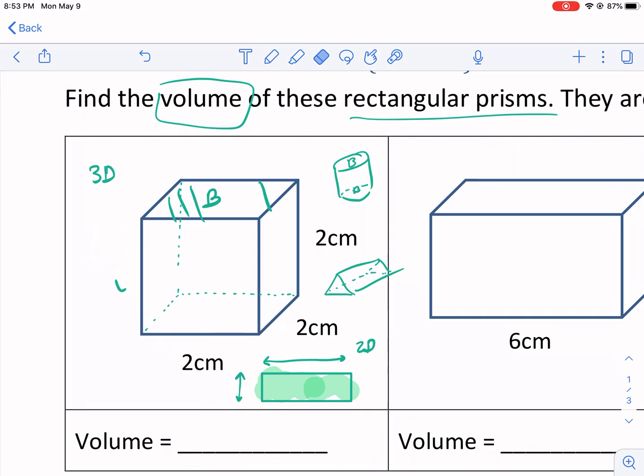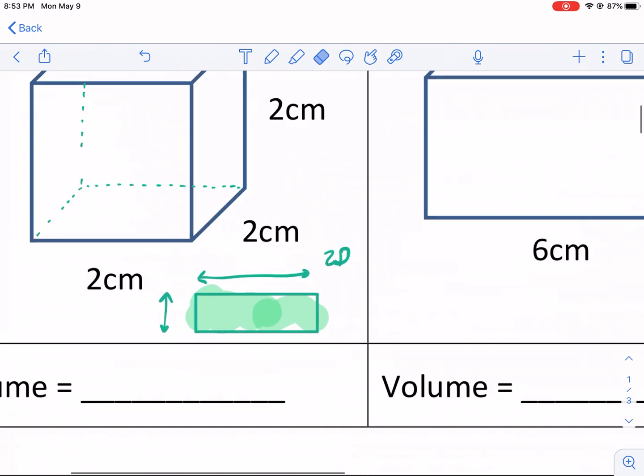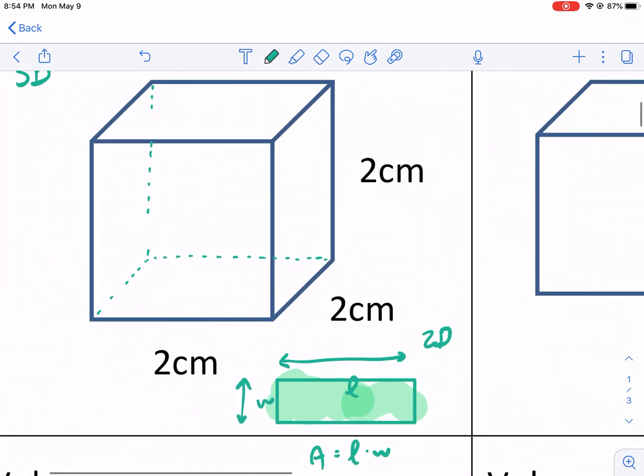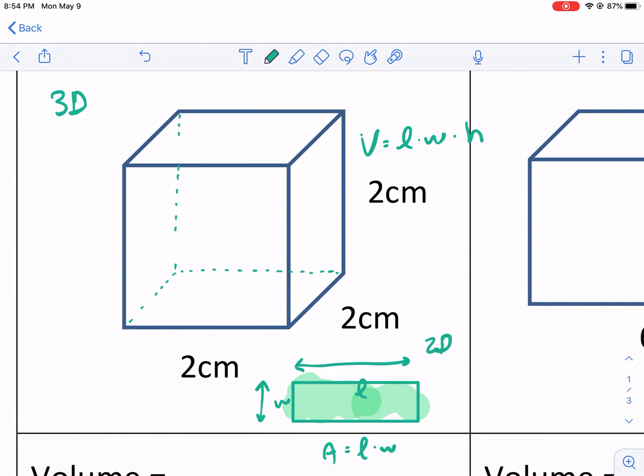Well, rectangular prisms are actually the easiest 3D shape to find the volume of. You simply extend the area formula just a little bit. The area formula is length times width. The area is length times width, but for volume of a 3D shape that's a rectangular prism, we do length times width times height or depth, however you want to do it. I like writing an H more than the D though, so I just do L times W times H.